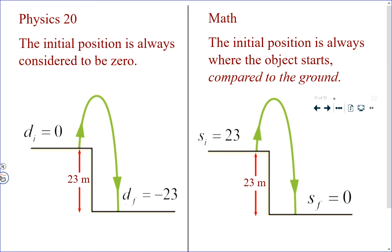And the initial position is whatever the initial position is in this course. So with the same illustration, if I throw an object upwards from the top of a 23 meter tall building, the position that the object has to begin with is 23 meters. The ground is always zero — always. Which quite frankly makes more sense than saying zero is at the top of a building, but that's what we do in Physics 20. So in math you need to remember that the ground level is always zero.